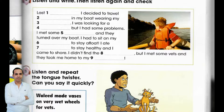Unit 9, Lesson 5, Page 55, Exercise 5. Listen and repeat the tongue twister. Can you say it quickly? Waleed made vases on very wet wheels for vets.